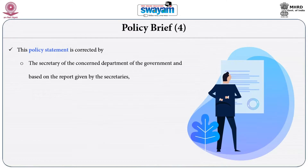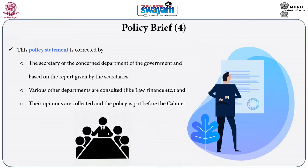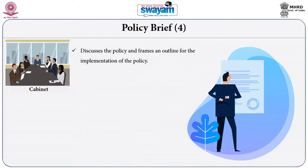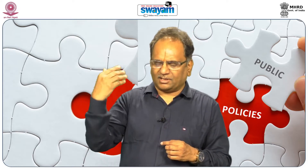The policy statement is reviewed by a secretaries committee of the concerned department. Based on their report, the law department, finance department, and other departments are consulted, their opinions collected, and a policy is framed and put before the cabinet. The cabinet discusses it and frames an outline of what to do, how to implement the policy, and what the financial implications are. After studying the financial implications, it comes up with a final policy.